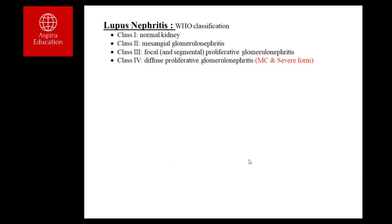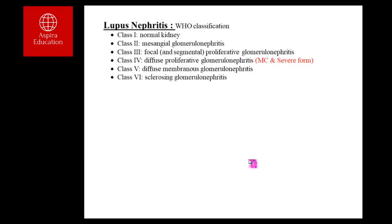Class IV should be treated as an emergency. Class V is the diffuse membranous pattern — thickening of the glomerular basement membrane causing diffuse membranous glomerulonephritis, which usually presents with proteinuria.